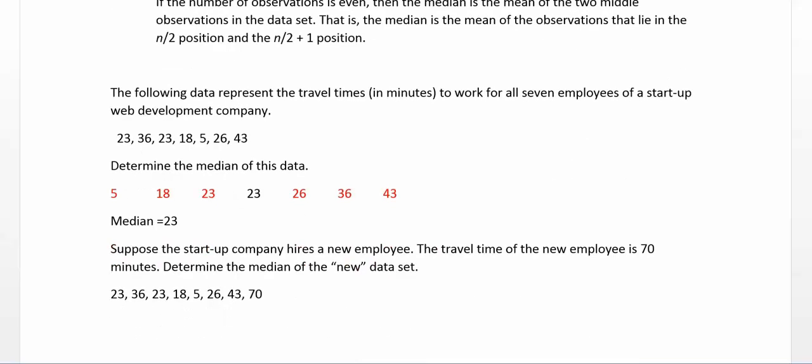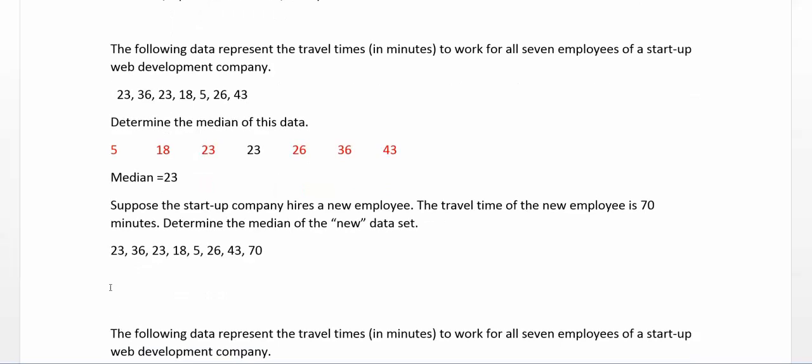Okay, do that same trick here, but now we've added an extra number, and then we'll talk about what's different about that. So I think 5 and 18, 23, 23, 26, 36, 43, and 70 is the new observation.